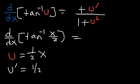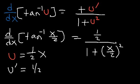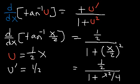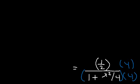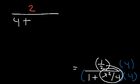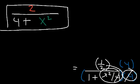So the derivative of inverse tangent of x over 2 is one-half divided by 1 plus x over 2 squared, which is equivalent to 1 over 2 divided by 1 plus x squared over 4. To simplify, multiply the top and bottom by 4. Four times one-half is 2; 4 times 1 is 4; and x squared over 4 times 4 leaves just x squared. The final answer is 2 divided by 4 plus x squared.